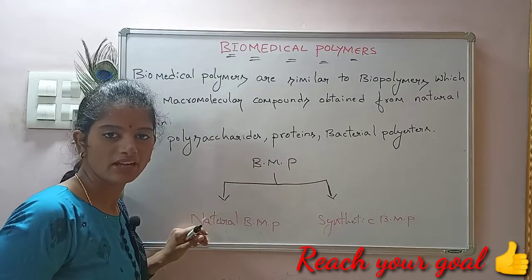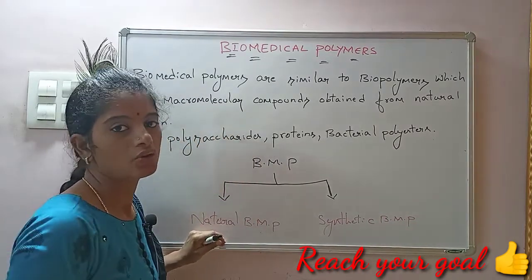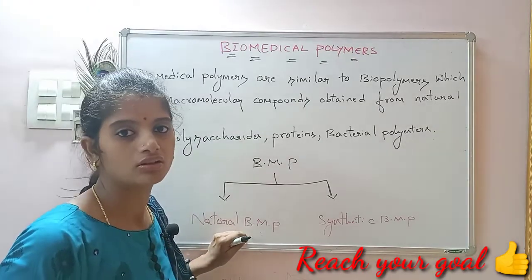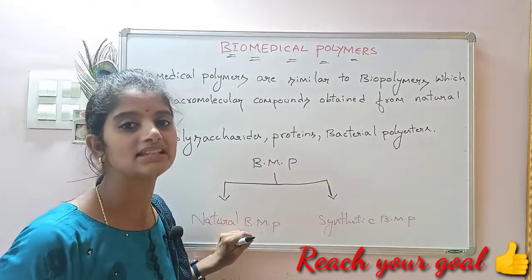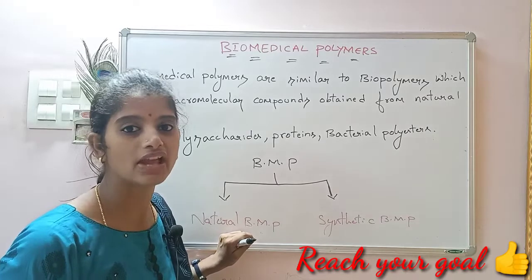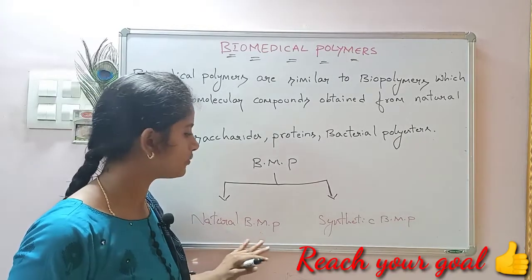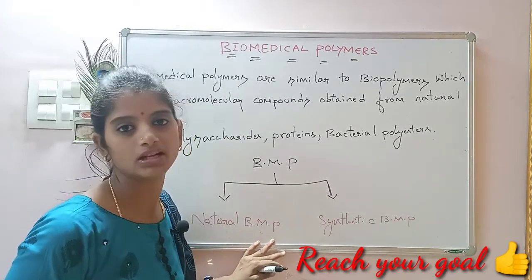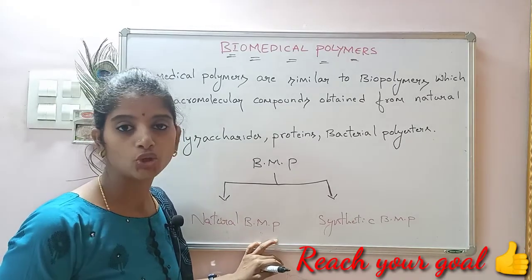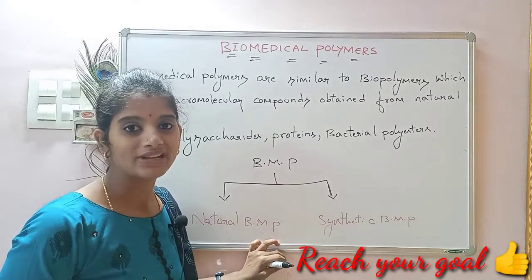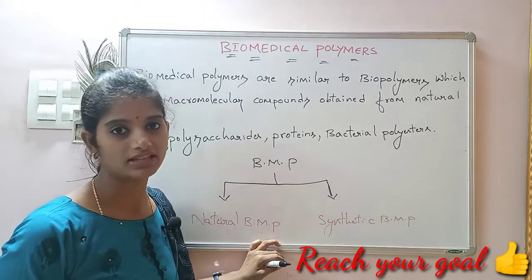What is natural biomedical polymer? Those polymers which are found in nature — nature means plants and animals — natural biomedical polymers are found there. Coming to examples: cellulose, silk proteins — these are the examples of natural biomedical polymers.